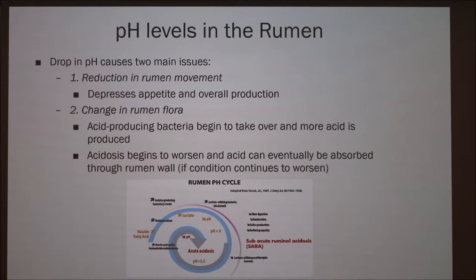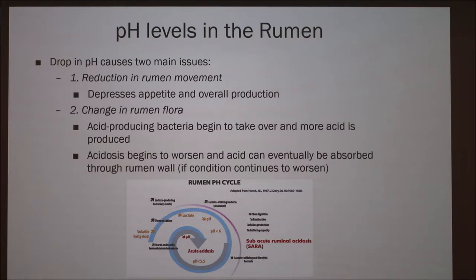There are two main causes for drops in pH levels in the rumen. The first is a reduction in rumen movement, which depresses the appetite and the overall production of the animal. The second is a change in the rumen flora, where acid-producing bacteria begin to take over and more acid is produced. This causes the acidosis to worsen, and the acid can eventually be absorbed through the rumen wall.